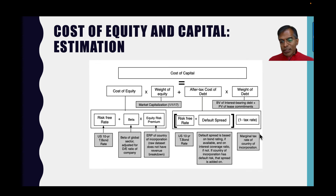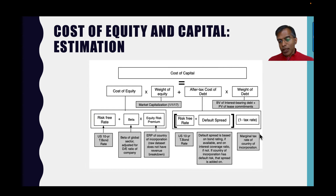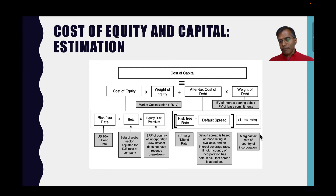If you're in a risky market where the country itself has default risk, I add the country's default spread to yours. For example, for an Indonesian company with a triple-B rating, I start with the risk-free rate in US dollars, add the default spread for a triple-B rated company, and then add the default spread for Indonesia — because companies bear the burden of country risk. For the tax rate, I use the marginal tax rate of the country in which you're incorporated. This may be slightly imprecise for multinationals, but the marginal tax rate — which comes from the tax code, not your financial statements — is the easiest practical fix.